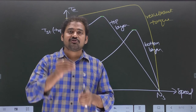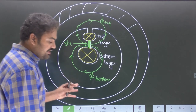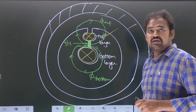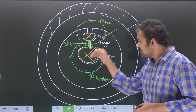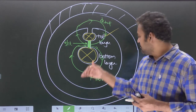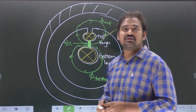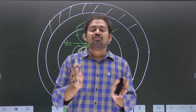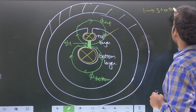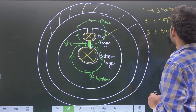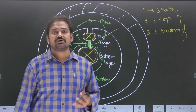In a double cage induction motor, the top layer winding — also known as outer cage winding — offers higher starting torque and lower running torque. The bottom layer winding — also known as inner cage winding — offers higher running torque and lower starting torque. Combining both gives the double cage induction motor. In total, there are three windings: the stator winding, the top layer (outer cage) rotor winding, and the bottom layer (inner cage) rotor winding.